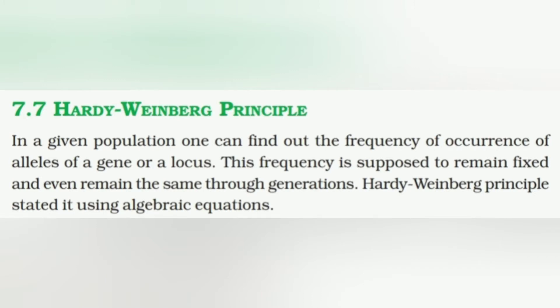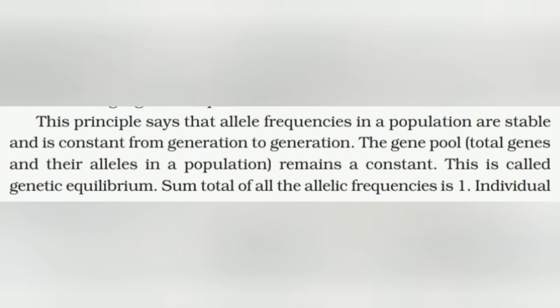Hardy-Weinberg Principle: In a given population, one can find out the frequency of occurrence of alleles of a gene at a locus. This frequency is supposed to remain fixed and remain the same through generations. Hardy and Weinberg stated this using algebraic equations. This principle says that allele frequencies in a population are stable and constant from generation to generation. The gene pool — the total genes and their alleles in a population — remains constant, and this is called genetic equilibrium.